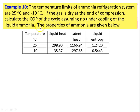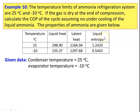We take Example 10. The temperature limits of an ammonia refrigeration system are 25°C and minus 20°C. The evaporator temperature is minus 20°C. If the gas is dry at the end of the compressor, calculate the COP of the cycle assuming no undercooling of the liquid ammonia. The properties of ammonia are given, including liquid enthalpy (Hf), latent heat (HfG), and liquid entropy (SG values).